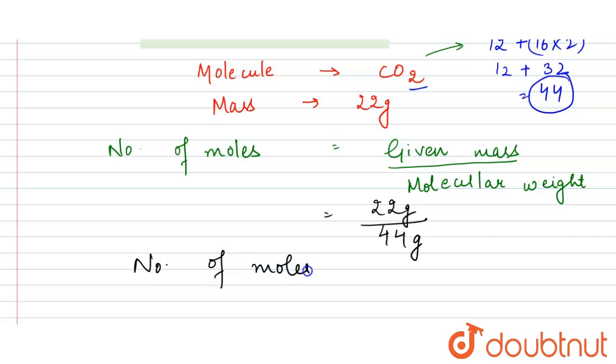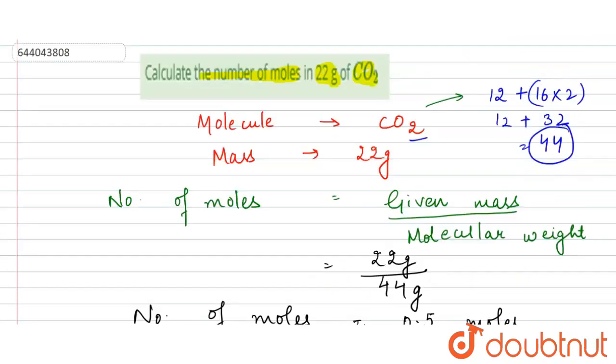The number of moles is equal to 0.5 moles. The number of moles for 22 grams of CO2 is 0.5. So here our answer is 0.5. That's our answer, thank you.